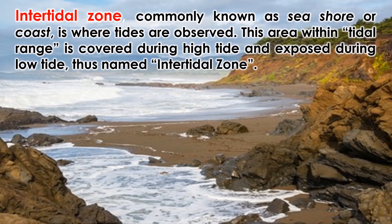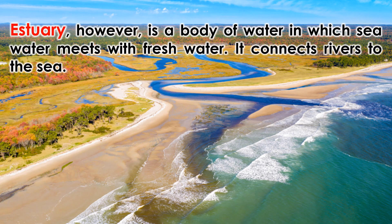The intertidal zone, commonly known as seashore or coast, is where tides are observed. This area within the tidal range is covered during high tide and exposed during low tide, thus named the intertidal zone. An estuary, however, is a body of water in which seawater meets with freshwater. It connects rivers to the sea.